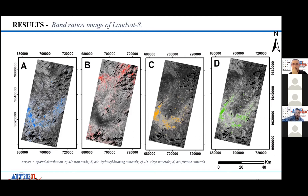The spatial distribution of indices applied in the thermal infrared region of ASTER and Landsat can be seen in the figures. Quartz was identified as red pixels across the study area, calcite was identified using the CA index as pink pixels in the west and south, and silicate oxides were identified using the CA index across the width of the study area.